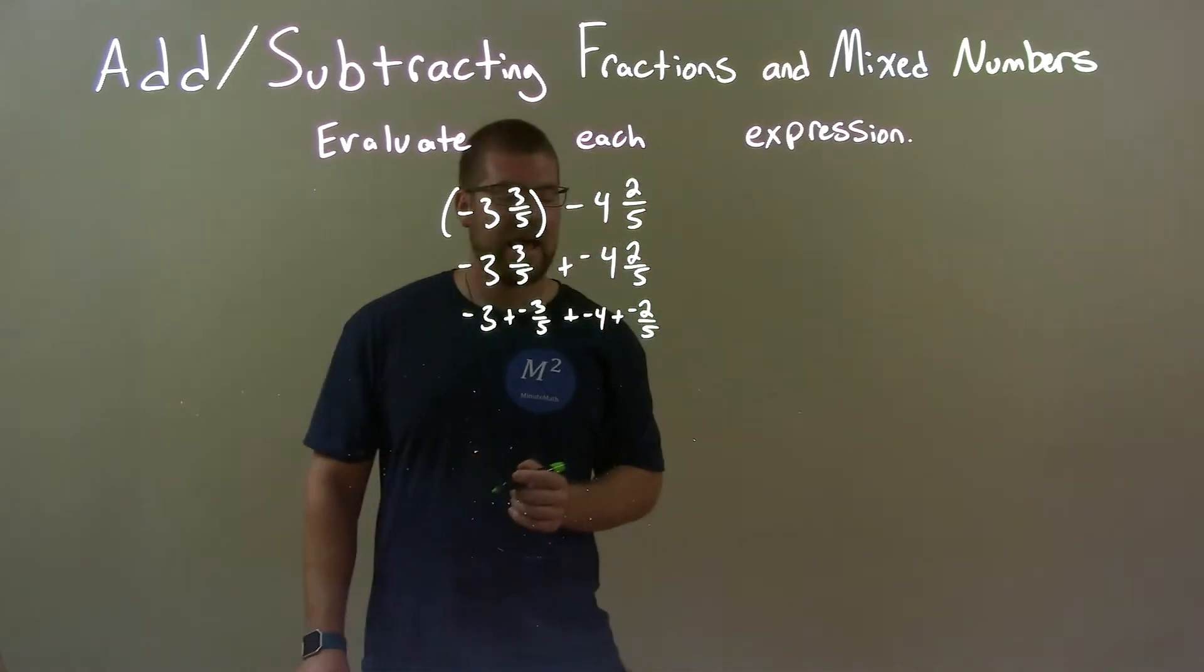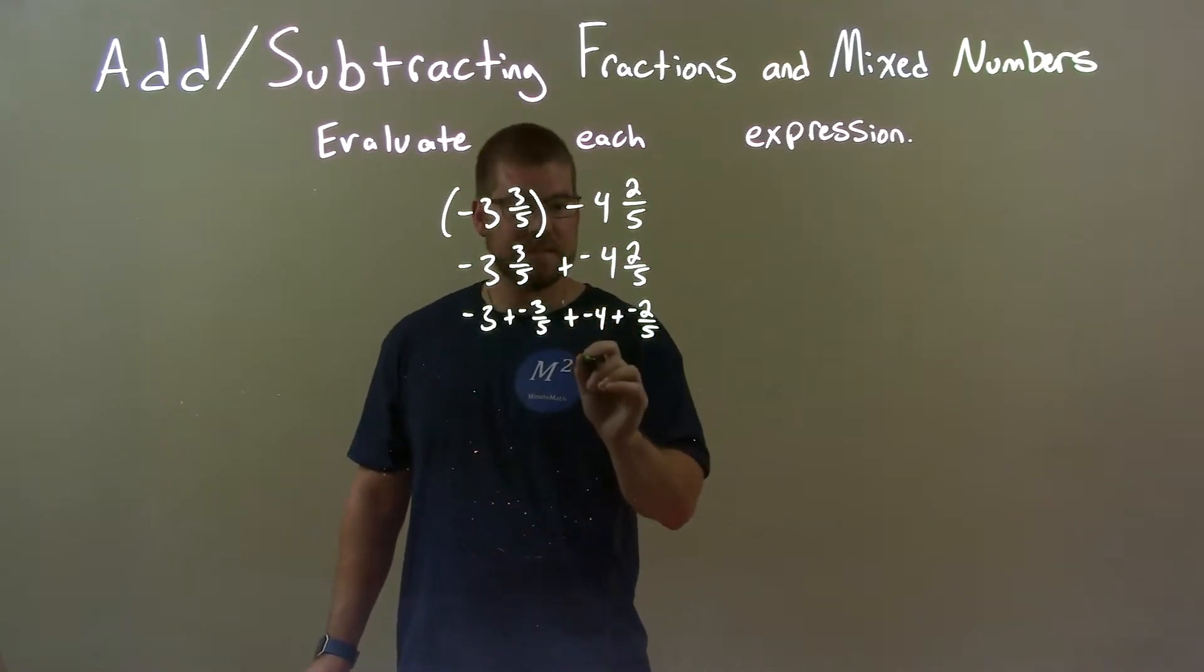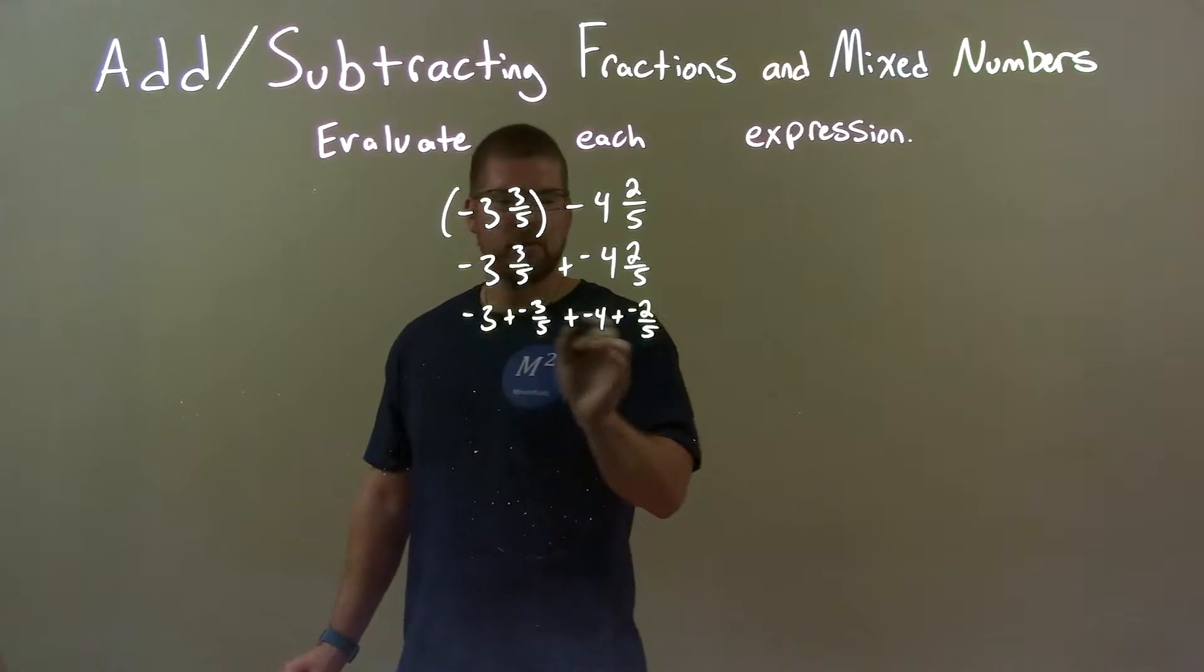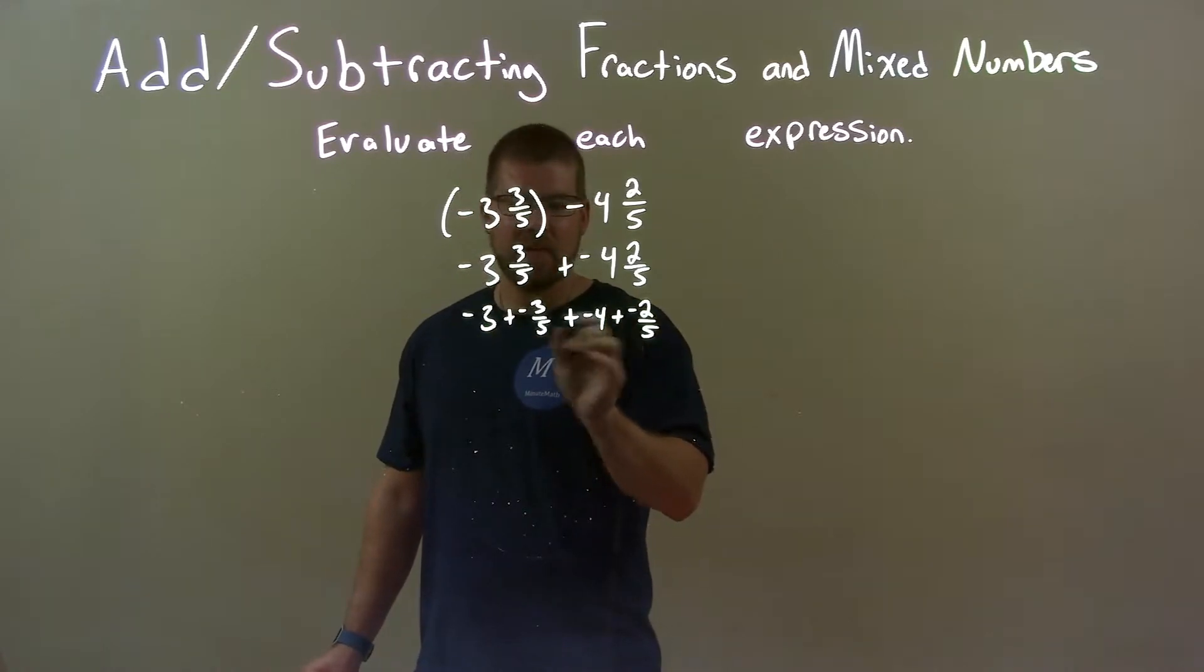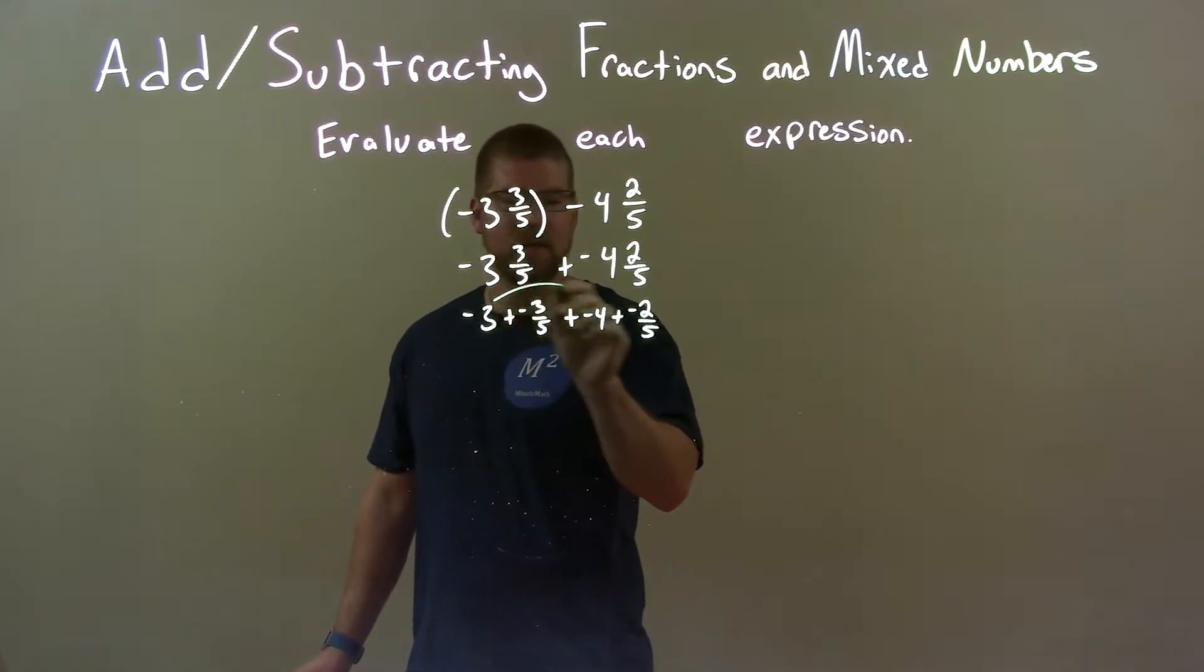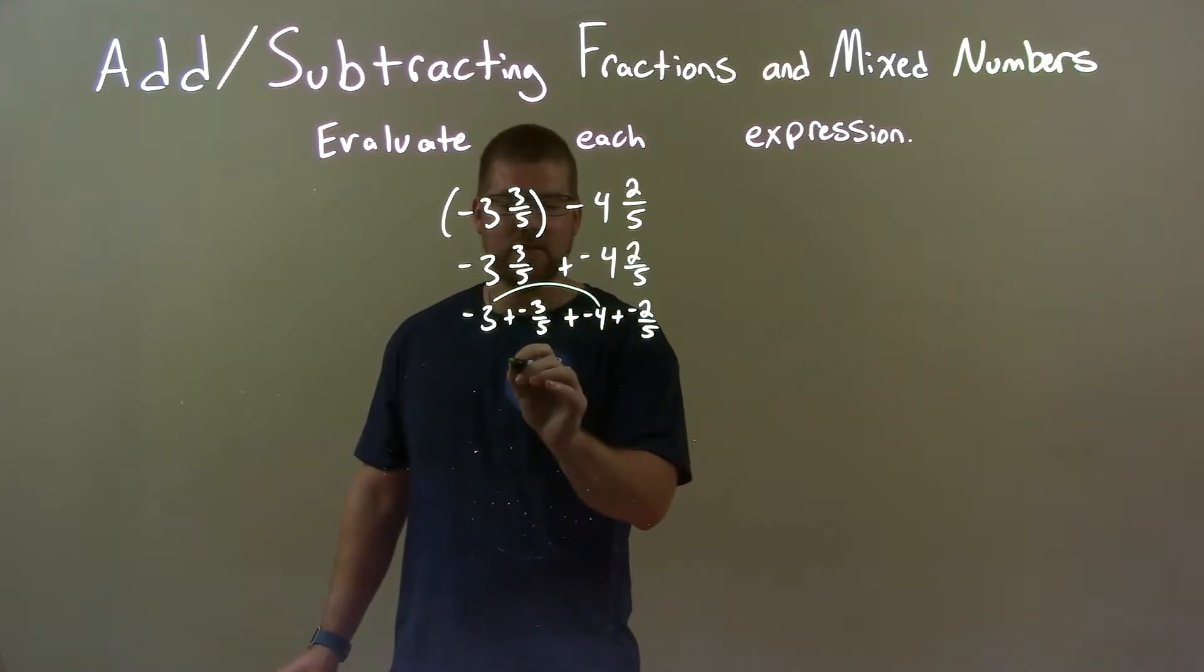We can break that down and what that allows us to do is really see what's going on here. Negative 3 and negative 4 together, we can add these two together and that becomes a negative 7.